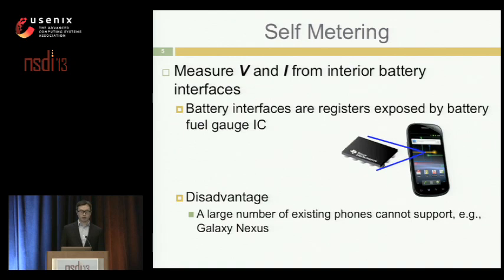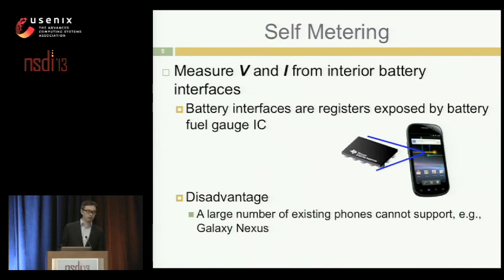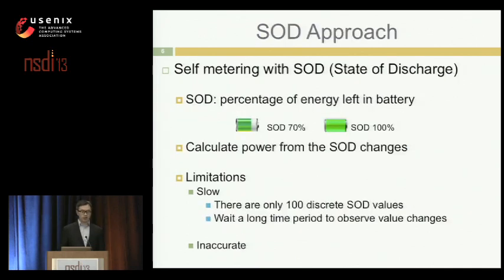Self-metering has some disadvantages: a large number of existing phones do not support it because their battery interface only provides voltage information. A variant called self-metering with SOD (State of Discharge) was developed to solve this problem and can run on most phones. SOD is the percentage of energy left on the smartphone — for example, if you charge your phone fully you have a green bar indicating 100% SOD, and after use it might drop to 70% SOD. You can calculate power using the SOD change, avoiding the need for current information.